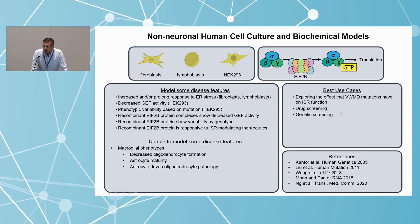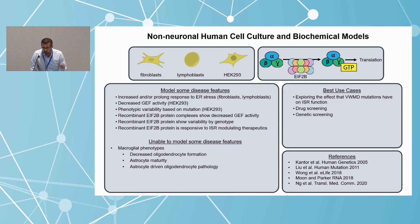Another model that may be underappreciated involves non-neuronal cells and biochemistry. These allow us to explore specific effects of Vanishing White Matter mutations on the enzymatic function of the EIF2B complex. You can express various mutations in non-neuronal cells and explore enzymatic activity, or use recombinant EIF2B protein to get at how mutations affect that. One can also do chemical screening to understand how potential therapeutics can directly affect the enzymatic activity of this complex. Of course, these are non-neuronal cells and don't provide cell-intrinsic cellular phenotypes in the CNS cell types of interest.